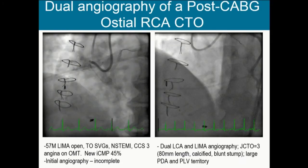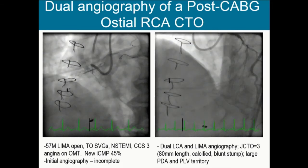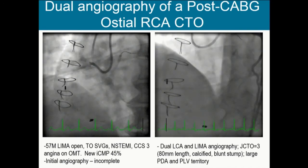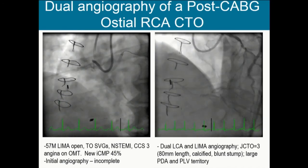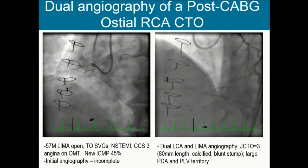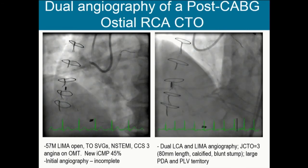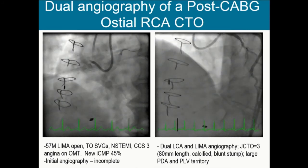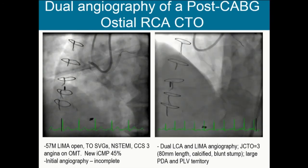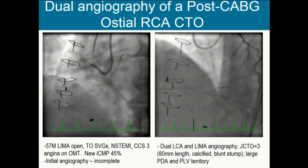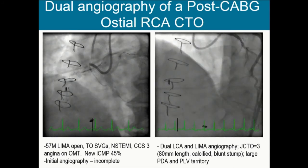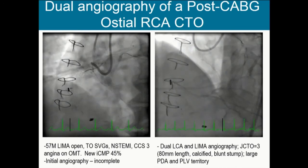Here is a case we performed yesterday, highlighting these step-by-step procedures in retrograde PCI. One of the first things was to perform good dual angiography. This was nearly a flush ostial RCA CTO — a long lesion. Our initial diagnostic angiogram identified one PDA and a modestly sized PLV. When we did both left coronary and LIMA angiography, we saw a very large distal circulation with two PDAs, one coming off right after the first with a severe ostial lesion. Spending time understanding and preserving the bifurcation is critically important. This was a complicated CTO with an 80-millimeter length, calcified blunt stump with a large distal bed.